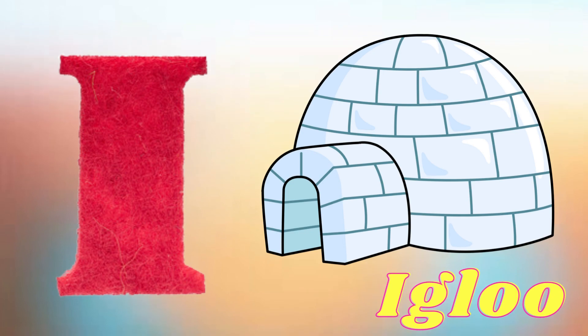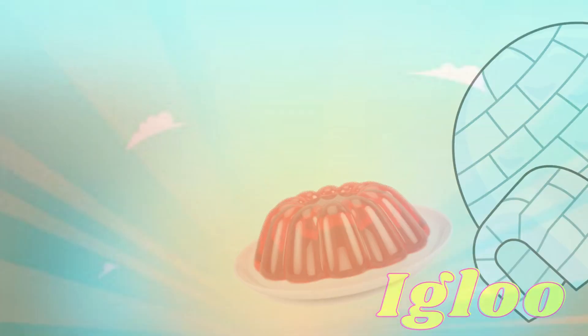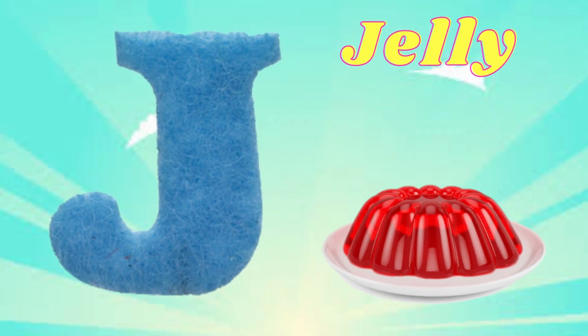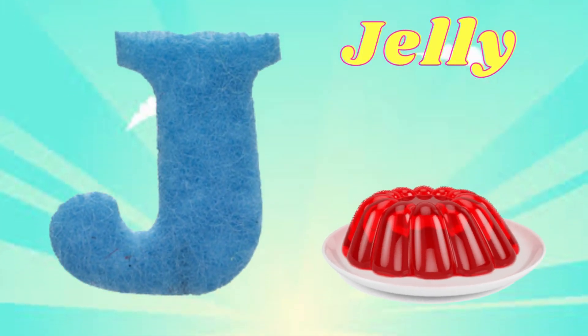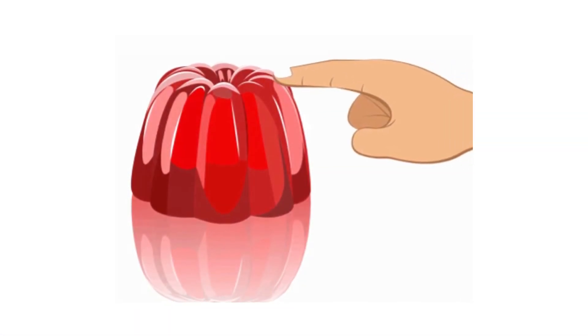I is for Igloo. E, Igloo, E, Igloo, I, Igloo. J is for Jelly. G, Jelly, G, Jelly, J, Jelly, J, Jelly.